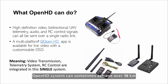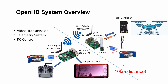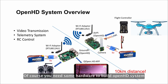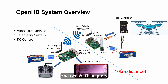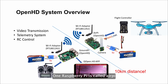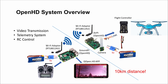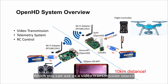Not only this, OpenHD systems can sometimes achieve over 10km transmission distance depending on your needs. Let's see how it works at a high level. The only additional hardware you need is two Raspberry Pis and two Wi-Fi adapters. OpenHD builds a two-way communication between your drone and your ground station. One Raspberry Pi is called AirPi, which connects to your flight controller via serial port. It also connects to a camera, which you can use as a video transmission source.